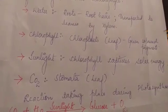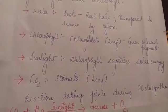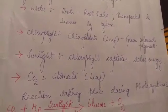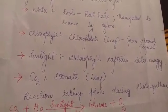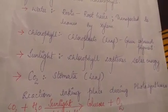Now we will see the process of photosynthesis in detail. When you pour water to the plants, the water is absorbed by the roots — more specifically, by the root hairs present in the roots. The water that is absorbed is then transported to all parts of the plant by xylem. Xylem is a tissue which conducts water.